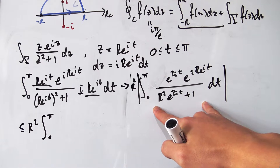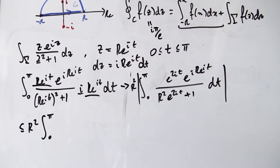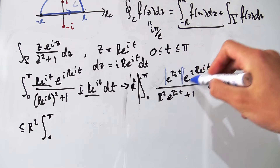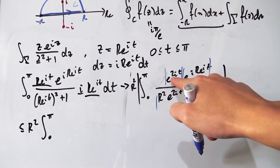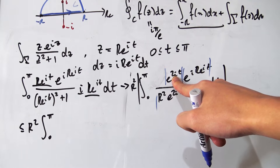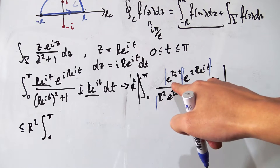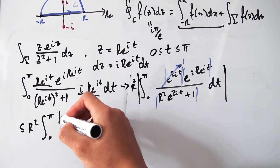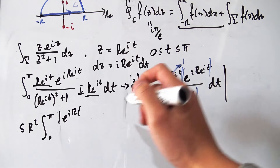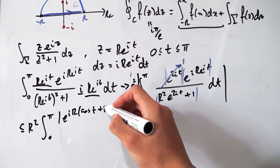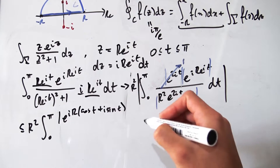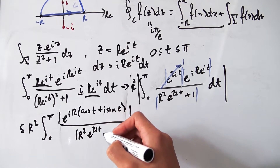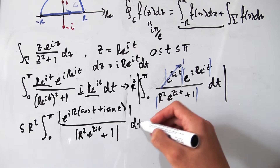Bringing the absolute values inside and splitting the product, we note that |e^(2it)| = |e^(i · real number)| = 1. So we're left with the absolute value of e^(i·R·e^(it)) times 1 over the absolute value of R²·e^(2it) + 1, all times dt. Expanding e^(it) as cos(t) + i·sin(t) via Euler's formula, the numerator becomes |e^(iR·cos t − R·sin t)|.